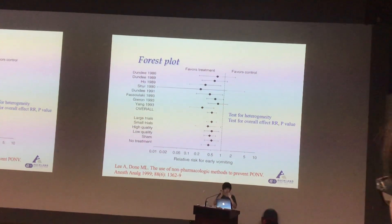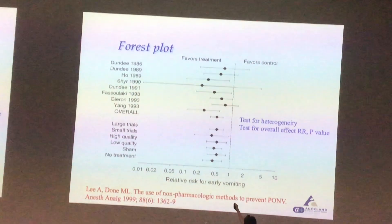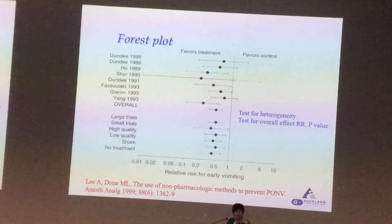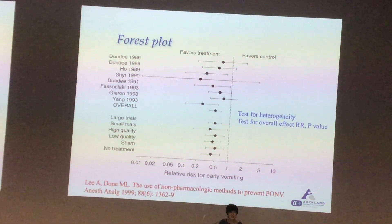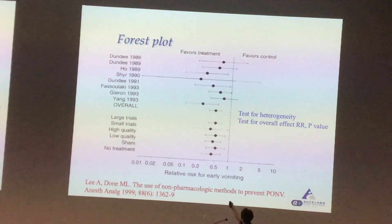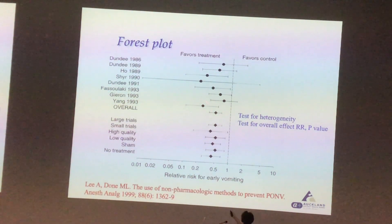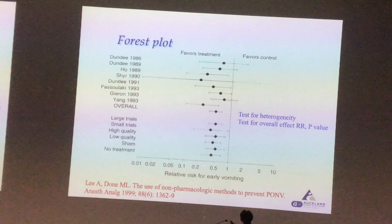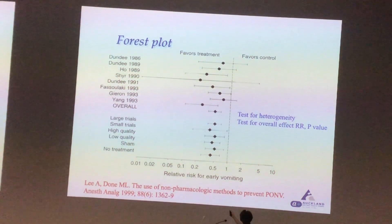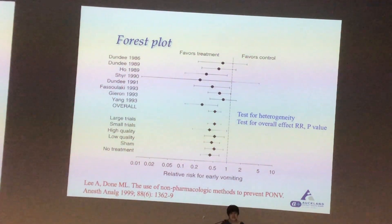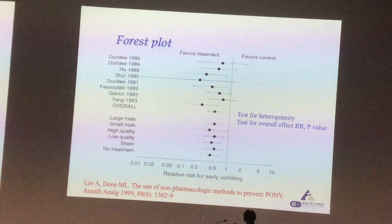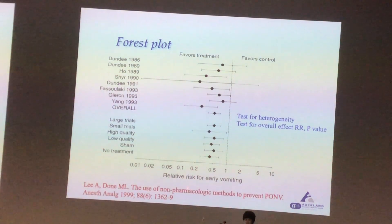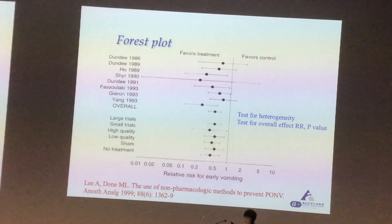It won't be significant — it's either here or there. If they don't cross the line, it's a significant effect. The size of the study matters. Ultimately you get the diamond — the diamond is the pooled estimate effect. Is it good or not here?